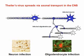Since Theiler's virus uses axons to spread in the CNS, we wondered if preservation of axons in WLD^S mice may favor the virus spread.